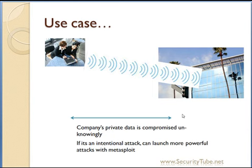It is also possible that when an employee starts his machine, there is some PNL or preferred network list configured in his laptop. Now, there is some access point with the same SSID lying around nearby. This is called a honeypot attack. I will be creating a separate video on honeypot attack, but if there is some honeypot access point and the employee is able to get the wireless coverage of that honeypot access point, his computer might go ahead and get associated with that honeypot access point.